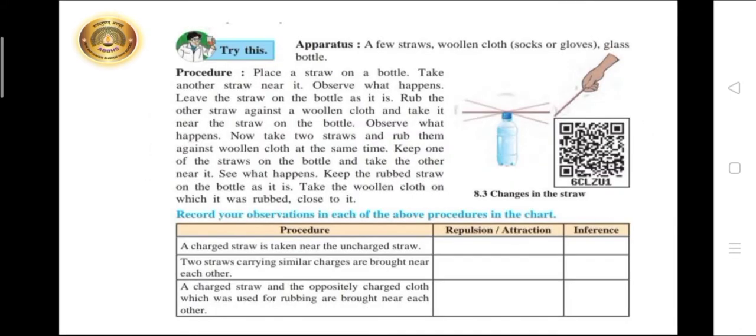Now come to try this. Apparatus: a few straws, woolen cloth, glass bottle. Procedure: place a straw on a bottle. Take another straw near it. Observe what happens.